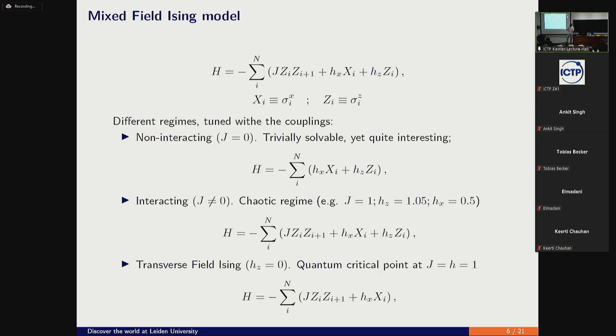Now, the model that we are studying, though this was very optimistic, is the mixed field ising where you have a chain of spins with coupling between neighboring spins in the ZZ direction, and also a magnetic field in the X direction and Z direction. These capital letters are the same as Pauli matrices X and Z, but a condensed version. Depending on the parameters, there are different models. You can have non-interacting, which is trivially solvable, and the interacting model, which has a chaotic regime, and also transverse ising model where HZ is zero. We plan to talk about everything, but there won't be time, so I'll focus mostly on the non-interacting system, which even though non-interacting has interesting properties, thanks to a recent paper by Matteo and Perfetto.